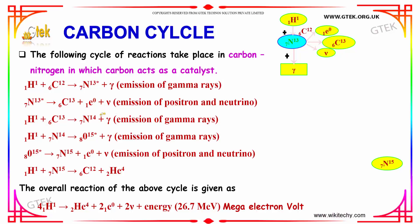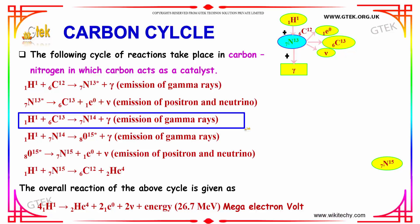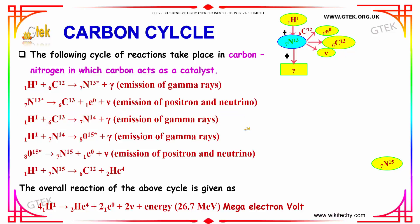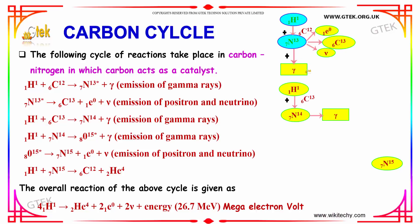Now, carbon-13 will combine with a proton to form nitrogen-14, with gamma rays emitted. Now, you got your gamma ray.